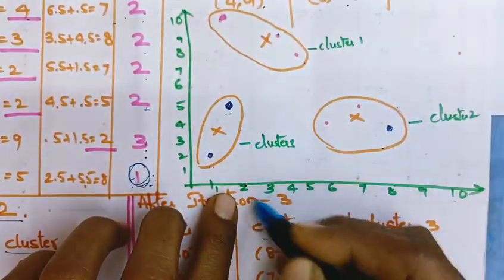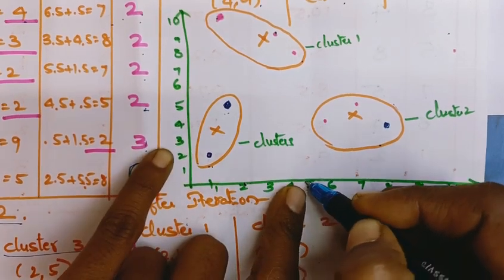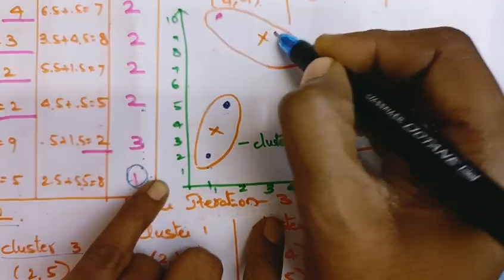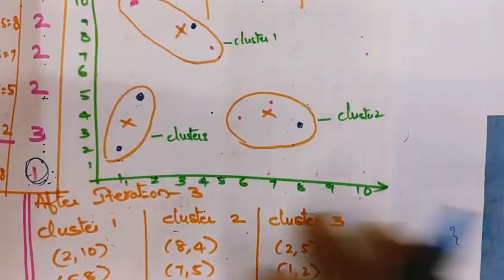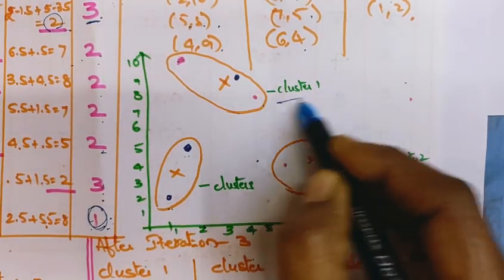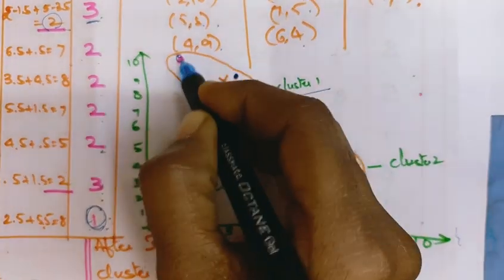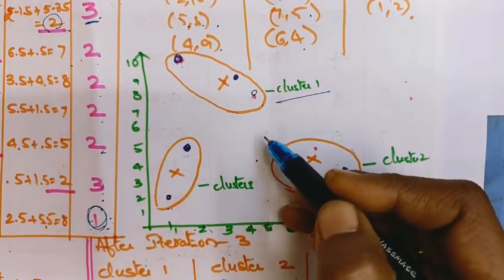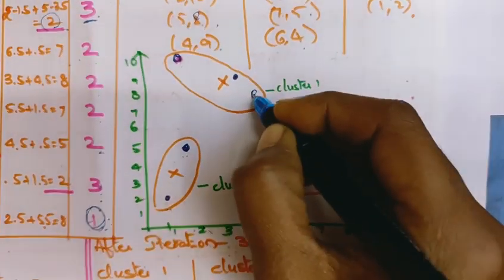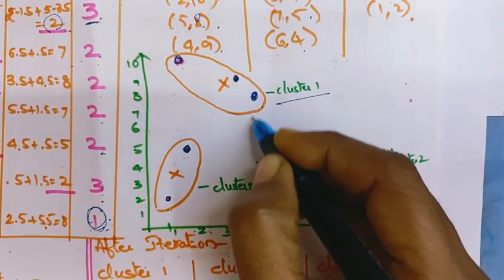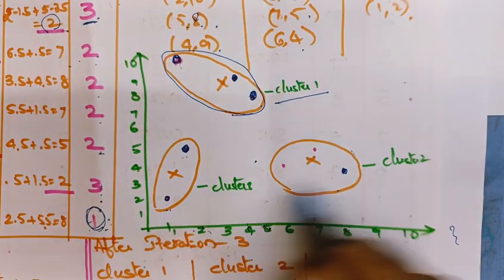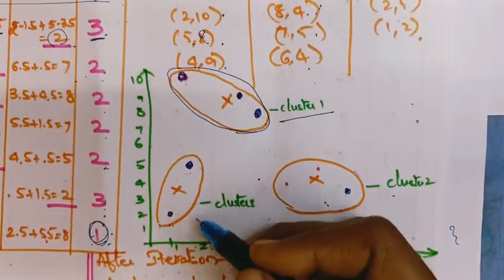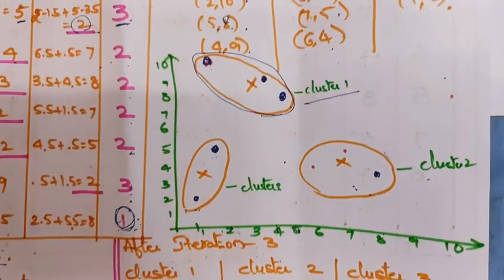The final clusters are: Cluster 1 contains (2, 10), (5, 8), and (4, 9). Cluster 2 contains (8, 4), (7, 5), and (6, 4). Cluster 3 contains the remaining data points. You can draw a diagram to visualize these clusters. This completes the K-Means clustering algorithm example.